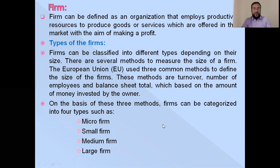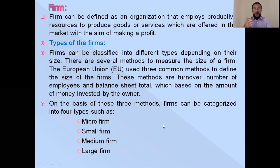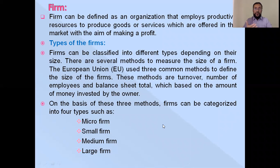A firm can be defined as an organization that employs productive resources to produce goods and services which are offered in the market with the aim of making a profit. A firm is an organizer which organizes the factors of production in order to produce goods and services and supply them to consumers for making profit.